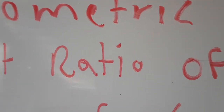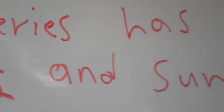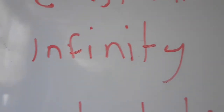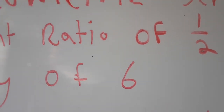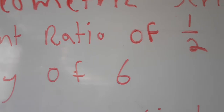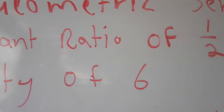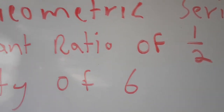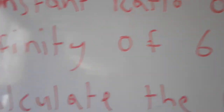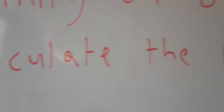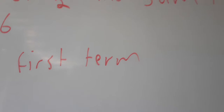We are given a constant ratio of one half, and a sum to infinity of six. The ratio determines each successive term, and the sum to infinity is six. We are asked to calculate the first term.